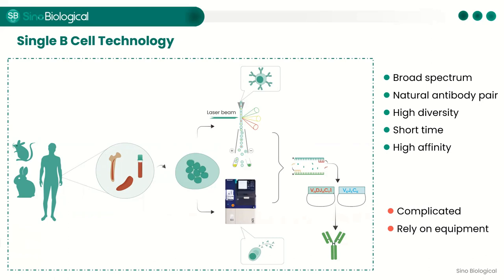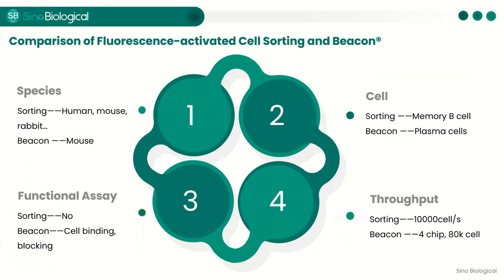Of course, this platform has its limitations. Single cell sorting equipment is required, resulting in higher cost. The following is a comparison of two techniques based on single B cell technology: fluorescence-activated cell sorting (FACS) and Beacon.